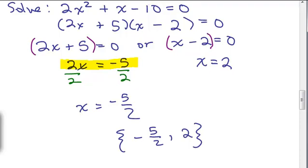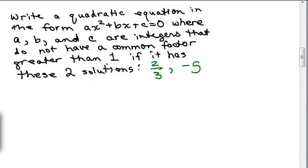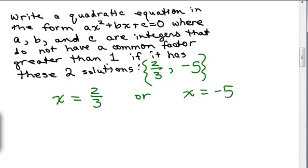So now let's do it for the problem we were given. So we're going to go backwards for this problem right here. So we're going to try to write a quadratic equation in this form. So how do we start? Here's the solutions. Usually we write solutions using the braces. So right before I wrote those solutions, I must have had x equals 2 thirds or x equals negative 5.